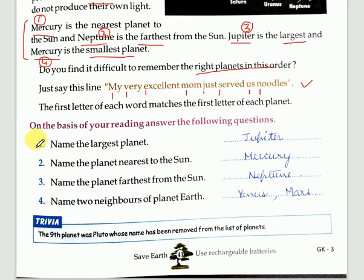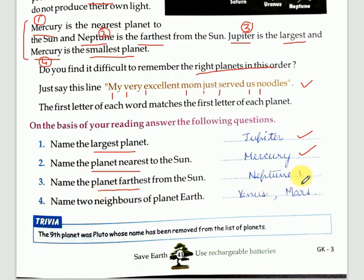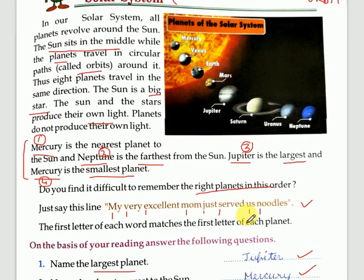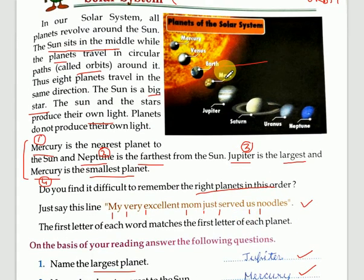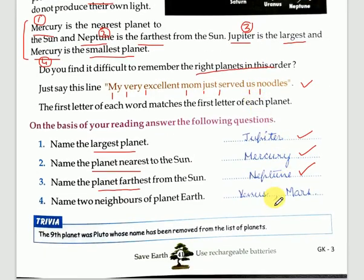Now let's move to the questions. Name the largest planet — the answer is Jupiter. Name the planet nearest to the sun — the answer is Mercury. Name the planet farthest from the sun — the answer is Neptune. Name the two planets which are neighbors of Earth — the neighbors of Earth are Venus on one side and Mars on the other side. So the answer is Venus and Mars.